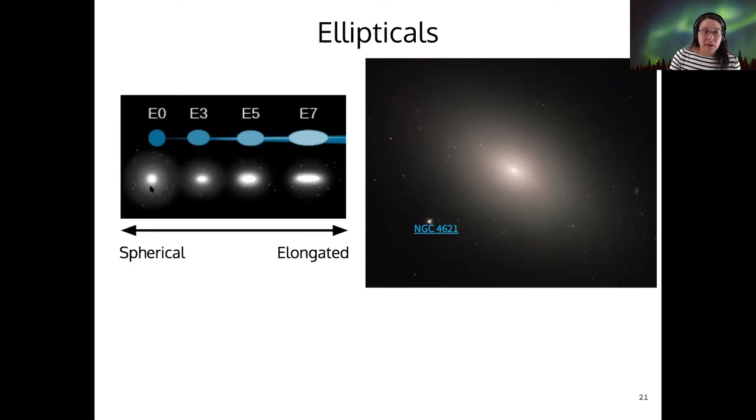And ellipticals are categorized by their shape as well, with E0 being more spherical and then up to E7 being the most elongated. So we would say that E7s are more cigar shaped. That's usually an analogy that's used.